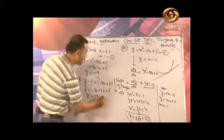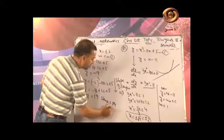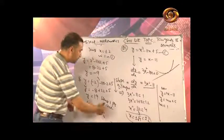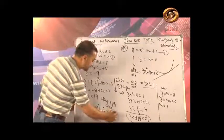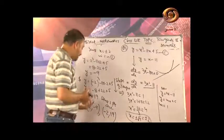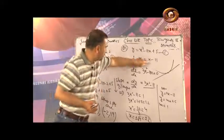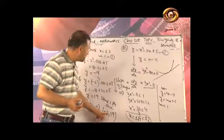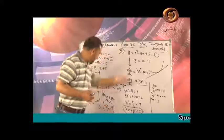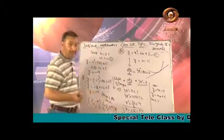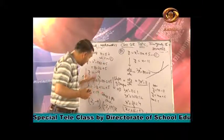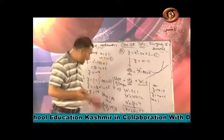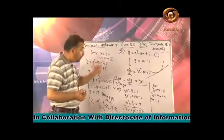Now we must verify which point lies on the tangent line y = x - 11. For (2, -9): substituting x = 2 gives y = 2 - 11 = -9. This matches, so (2, -9) is valid. For (-2, 19): substituting x = -2 gives y = -2 - 11 = -13, but y should be 19 — this doesn't match, so (-2, 19) is rejected. The required point is (2, -9).